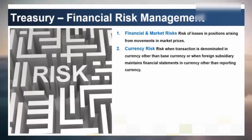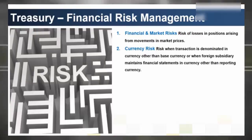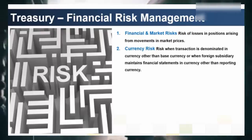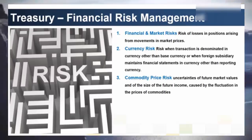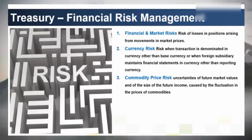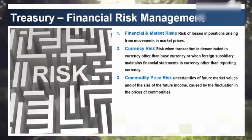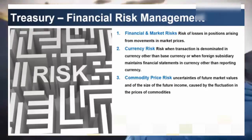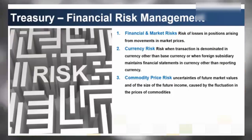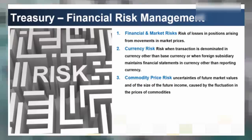Currency risk and foreign exchange risk arises when a transaction is denominated in a currency other than the base currency, or when a foreign subsidiary maintains financial statements in a currency other than the reporting currency. Instruments exposed to currency risks include forward exchange outstanding transactions and currency options. Commodity price risk refers to uncertainties of future market values and future income caused by the fluctuation in commodity prices. Commodity risk management is to identify, quantify and mitigate exposure to commodity price and foreign exchange risk. Robust analytics are used to understand risk positions in real time, reducing price risks from core business operations with appropriate hedging.